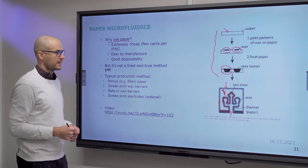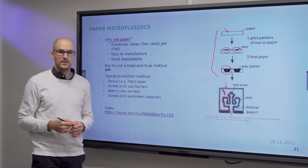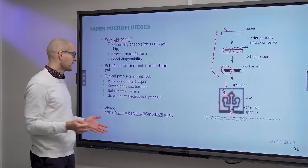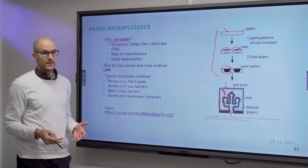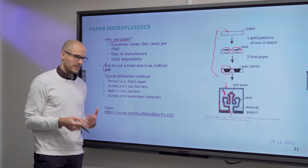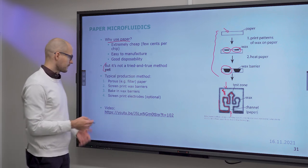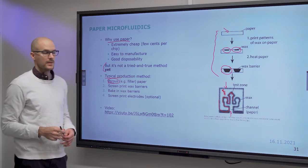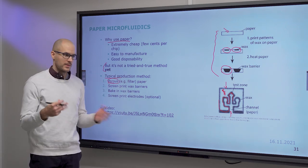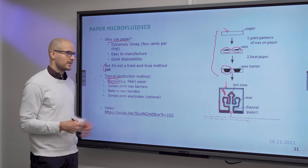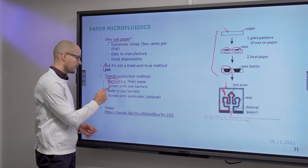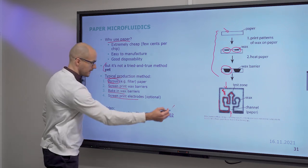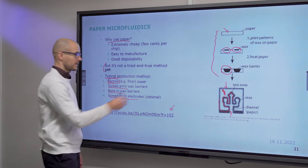So, reasons to use paper are that it is really cheap. We're talking about a few cents per chip. It is easy to manufacture. And it is highly disposable. The problem is that it's not really standardized. And at the moment, the reproducibility, the repeatability is questionable. So, typically, as I said, a porous paper membrane is used as the starting layer. Which is highly absorbent towards water. And then you screen print wax barriers. You bake them in. And then you can also screen print electrodes. And you can check out this video about one such example system.